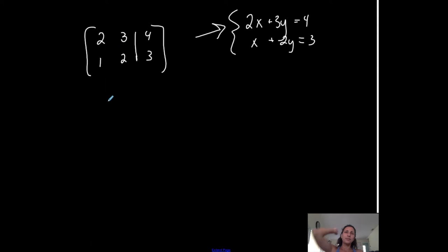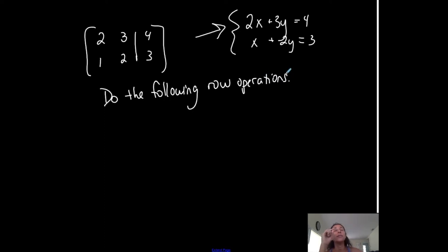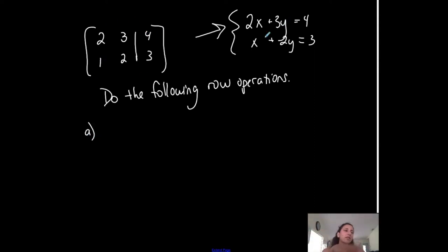What operations am I allowed to do to this? Let's say that you're asked to do the following row operations. I want to show you this because I want you to understand the terminology, the notation that is involved with row operations — doing the following row operations to this particular matrix, which came from this system.